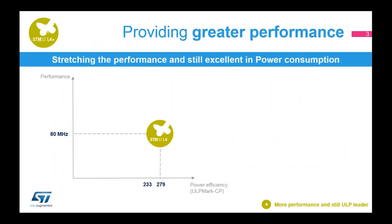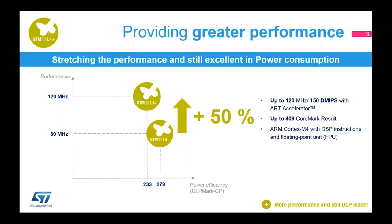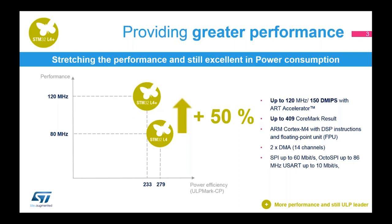The first message regarding the STM32L4 Plus is greater performance. It provides 50% more performance versus the STM32L4 while keeping excellence in power efficiency. It runs at 120 MHz with 150 DMIPS using a Cortex-M4 and floating-point unit. It also features 2D DMA, high-speed peripherals, and two OctoSPI interfaces supporting NOR Flash and HyperBus SRAM.